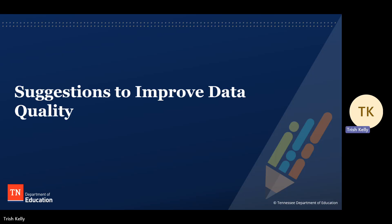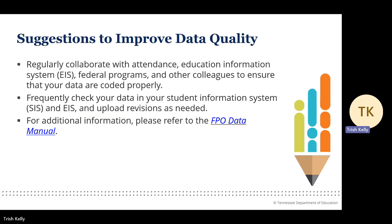Suggestions to improve data quality. First, regularly collaborate with your colleagues in attendance, EIS, federal programs, and other teams that work with data to ensure that your data are coded properly. Next, frequently check your data in your student information system and EIS and upload revisions as needed. Finally, regularly refer to the FPO Data Manual for information about data definitions and reporting requirements.